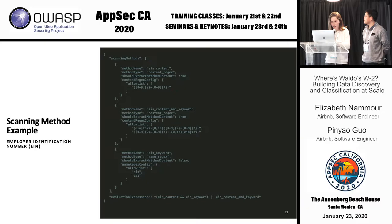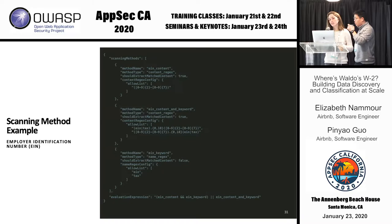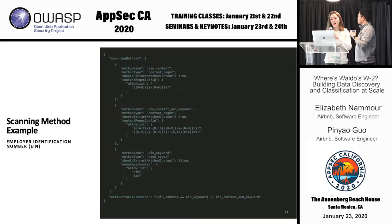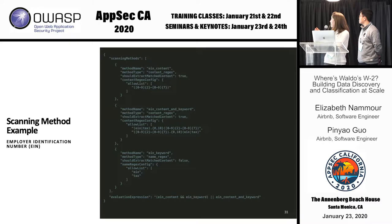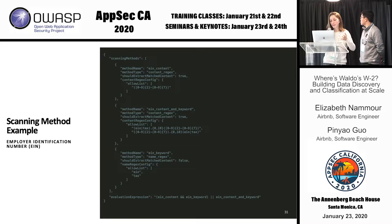Here is an example of how we detect employer identification numbers. We define a first method that checks for a regex in the content — EINs follow a specific format: two digits, a dash, then seven more digits. We check whether the content matches that regex. We found the regex caused some false positives because some random strings matched it, so we also check whether the words 'EIN' and 'tax' appear in the content before or after that regex match. Finally, we also look at metadata to check if 'EIN' and 'tax' are present in the column name or object name.